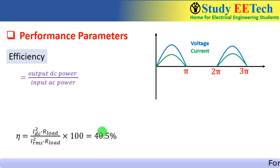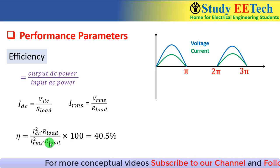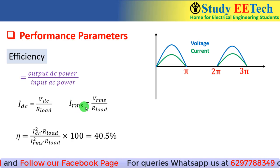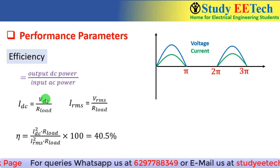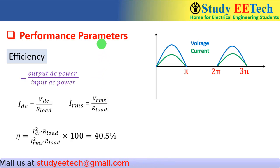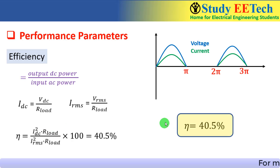Later on we will see this comes to be 40.5%. Now Idc can be written as Vdc / R_load, and Irms can be written as Vrms / R_load. Putting these values in, R_load cancels out. We can then substitute the known values of Vdc and Vrms, which we have already seen how to calculate in previous videos. Putting all these values together, the efficiency η comes to be 40.5%. So the key point to remember is that for a half-wave rectifier, the efficiency is 40.5%.